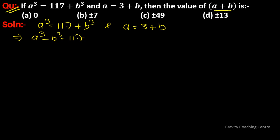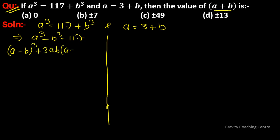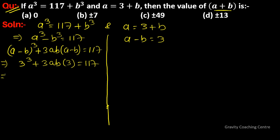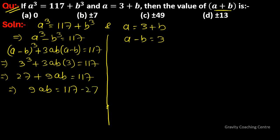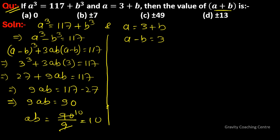So a³ minus b³ equal to 117, which expands to 27 plus 9ab equal to 117. This implies that 9ab equal to 117 minus 27, so 9ab equal to 90, therefore ab equal to 90 upon 9 equal to 10.